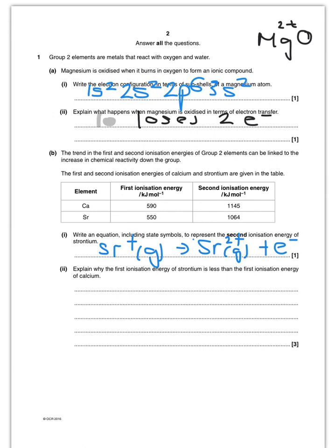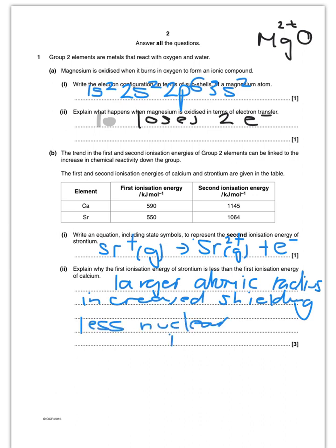So why is the first ionisation of strontium less than that of calcium? Well, strontium is obviously further down the group than calcium. And therefore strontium has a larger atomic radius. It will also have increased shielding, because there are more shells between the outer electron and the nucleus. The outer most electron is going to be further away from the nucleus. And therefore there is going to be less nuclear attraction between the nucleus and the outer electron. And therefore it is easier to be lost. So less nuclear attraction.